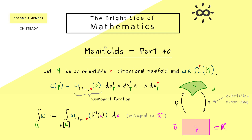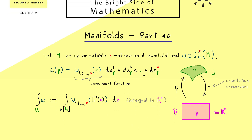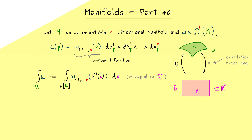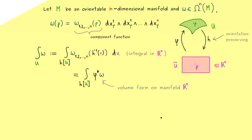Now the question is: is this even well defined? We should ask what happens if we go to another chart defined on u. To answer that, we introduce a short notation for the right-hand side: this will be the integral of the volume form phi star omega. Indeed, this is now a volume form defined on Rn, and for these volume forms we have already discussed what integration means.